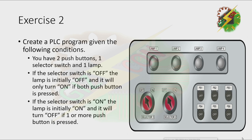Exercise 2: Create a PLC program given the following conditions. You have two push buttons, one selector switch, and one lamp. If the selector switch is off, the lamp is initially off and will only turn on if both push buttons are pressed. If the selector switch is on, the lamp is initially on and will turn off if one or more push buttons are pressed.